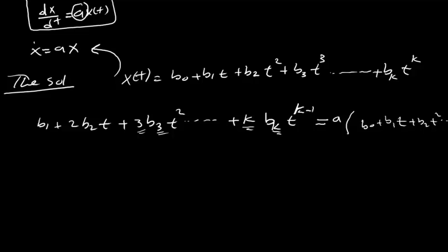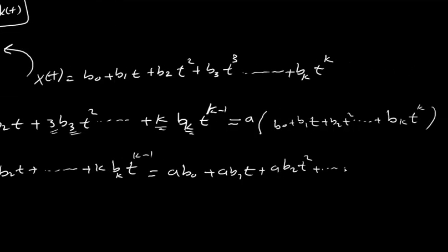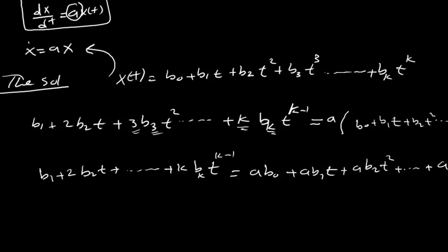Now equating the coefficients of equal powers of t: b1 plus 2*b2*t plus ... k*bk*t^(k-1) equals a*b0 plus a*b1*t plus a*b2*t squared plus ... a*bk*t^k. We equate each same power of t on both sides.